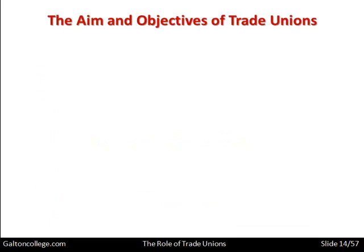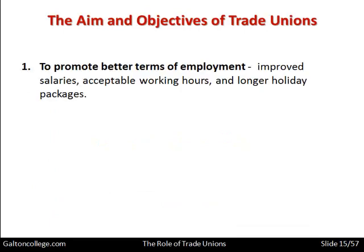The aims and objectives of trade unions include promoting better terms of employment: improved salaries, acceptable working hours, and longer holiday packages. People are human and we need time off work — we need to recharge our batteries, relax, and recover. Work can be arduous. Back in the 1700s and 1800s in the UK, work was extremely hard and people needed to rest so that they could go back and work again.